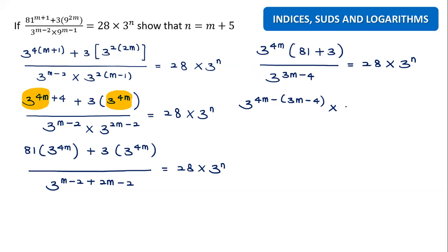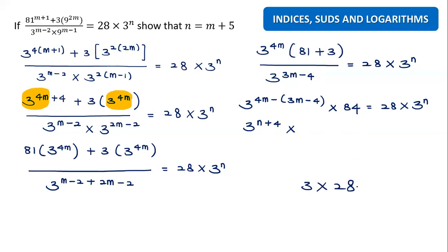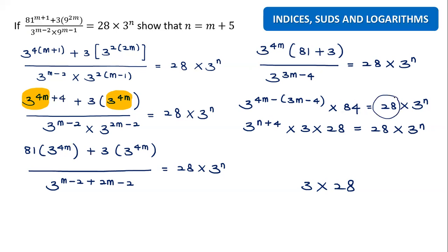So we get n minus the combined exponent, and the bracket gives 84. Now this 84 actually came from 3 times 28. The reason I change 84 into 3 times 28 is because I can see a 28 on the right-hand side. So I want to match that 28, and then these two 28s can be combined.